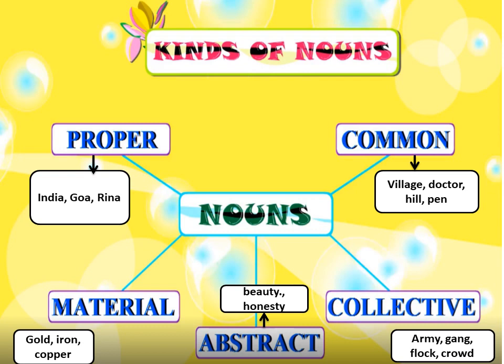Proper nouns — examples: India, Goa. Common nouns — examples: village, doctor, hill, pain. Collective nouns — examples: army, gang, flock, crowd. Abstract nouns — examples: beauty, honesty. Material nouns — examples: gold, iron, copper.